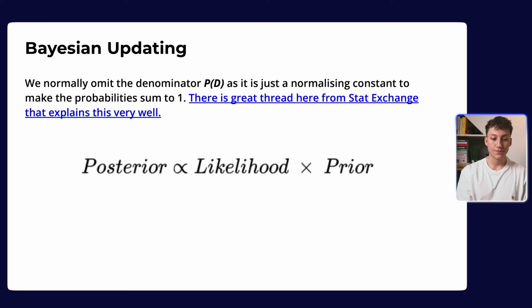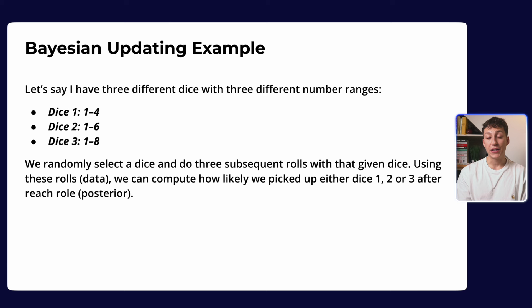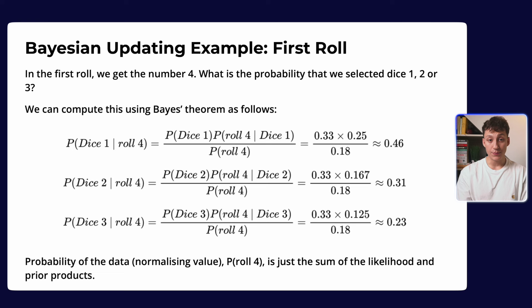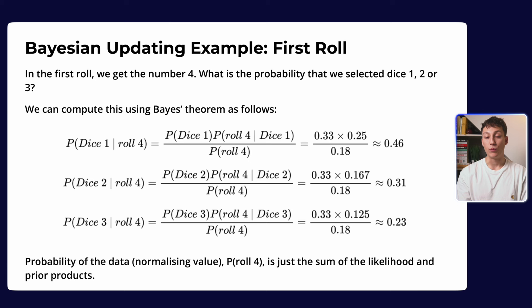Let's go for a concrete example to drive home the theory. We have three dice of different ranges: dice one goes 1 to 4, dice two goes 1 to 6, and dice three goes 1 to 8. We randomly select one of those dice and do three subsequent rolls. After each roll, we update our hypotheses about which dice is most likely, and this posterior becomes the new prior for the next roll. In the first roll we get a four. The prior for each dice is equally 33% since we randomly selected.